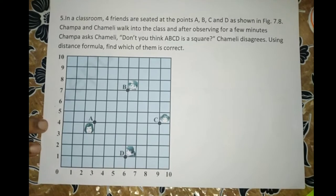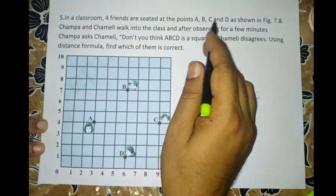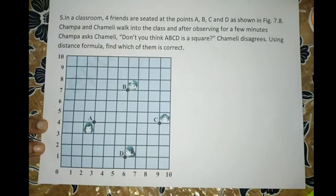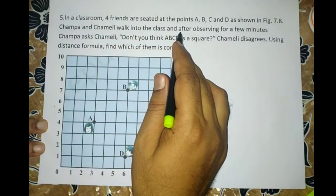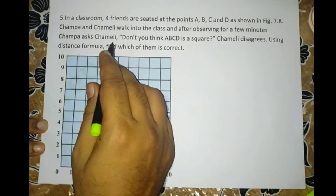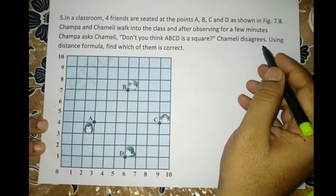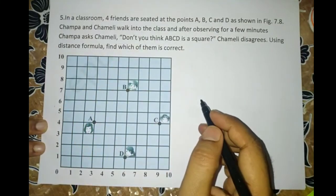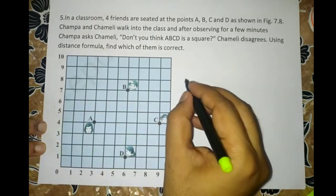Children, this is question number 5. In a classroom, four friends are seated at the points A, B, C, D as shown in the figure. Champa and Chameli walk into the class and after observing for a few minutes, Champa asks Chameli, Don't you think ABCD is a square? Chameli disagrees. Using distance formula, find which of them is correct.